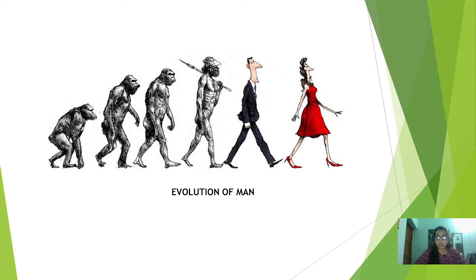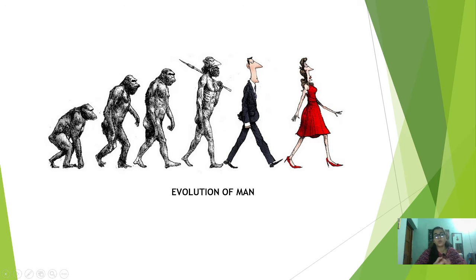It will take millions and millions of years. In this part of the video we are going to discuss how the evolution of man took place, how the ancestral form of man looked, and how the modern form looks. You can see in this image how evolution took place. Now let's discuss what actually happened.